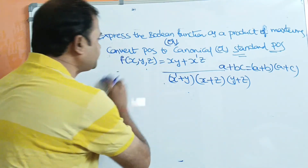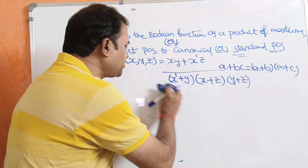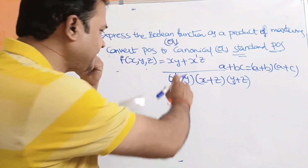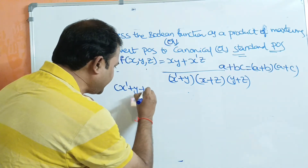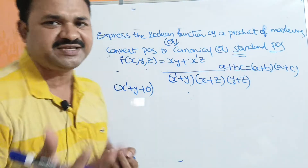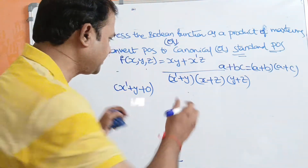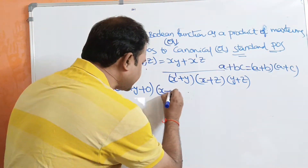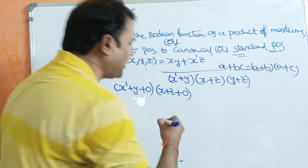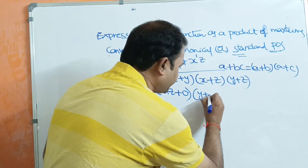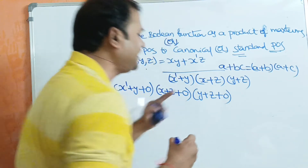Now we need to convert this POS into canonical or standard POS. Observing the first term (x' + y), z is missing. So for z, we add 0, because a + 0 = a — adding 0 won't change the result. In the second term (x + z), y is missing, so we add 0. In the third term (y + z), x is missing, so we add 0.